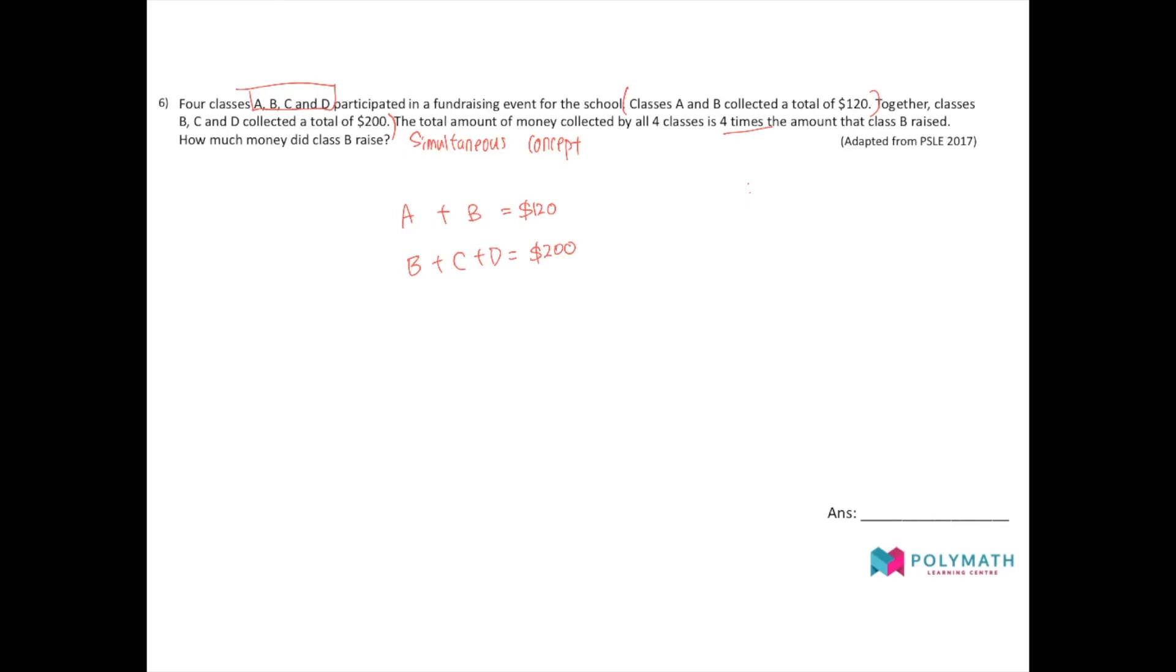The total amount of money collected by all four classes is four times. And therefore, all four classes means A plus B plus C plus D. It's actually four units. And B is actually one unit.